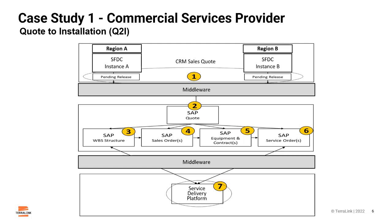As I describe the quote-to-installation process, you will have noted that it runs across multiple departments and functions and is supported by three core applications: CRM for sales, the ERP system for the back office creation of the sales and service orders, and the service deployment platform for the installation teams. This is where our first case study really begins.